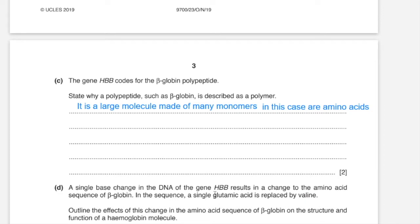As for your answer: glutamic acid had a hydrophilic R group, which made it soluble in water. That is the reason glutamic acid in the beta polypeptide of hemoglobin would have been present on the surface of hemoglobin, so that it was able to form hydrogen bonds with water. Now that it is replaced by valine, which has a hydrophobic R group, this makes the molecule less soluble. It also makes the molecule less efficient at carrying oxygen by decreasing its affinity for oxygen.